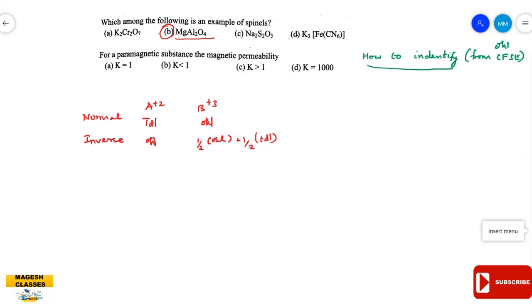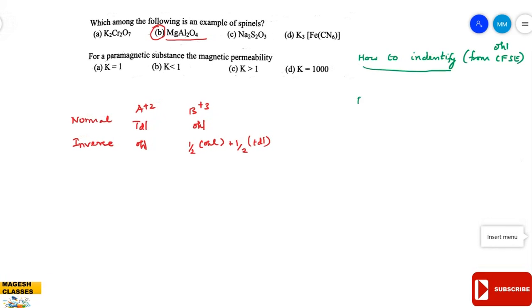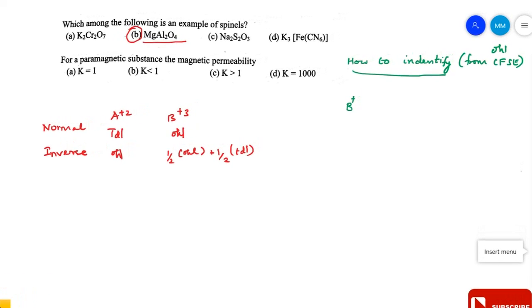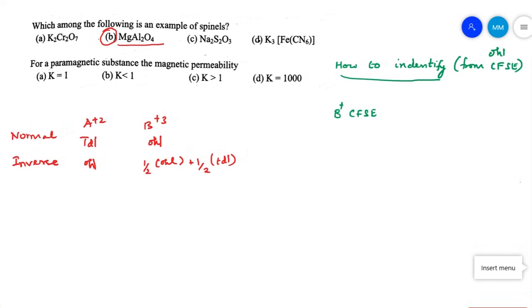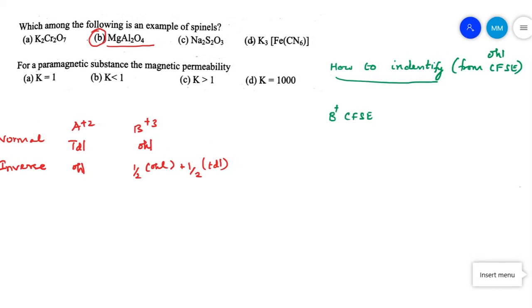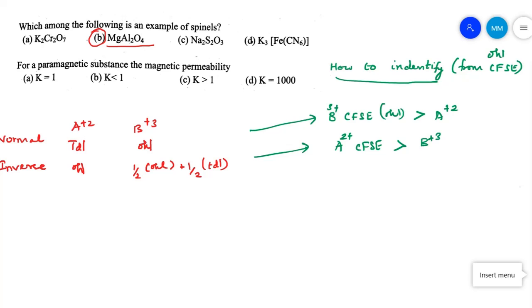There are different techniques. The most used technique is the octahedral CFSE values. In the case of normal spinel, the dipositive ions are in the tetrahedral voids and the tripositive ions are in the octahedral voids. You calculate the octahedral CFSE value — that is, the Crystal Field Stabilization Energy — of the tripositive ion. In the octahedral field, if the CFSE of the tripositive ion (B³⁺) is greater than that of the dipositive ion, this is the normal spinel.